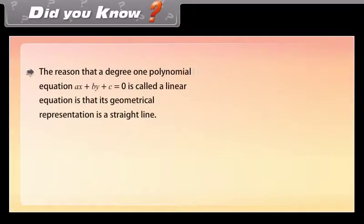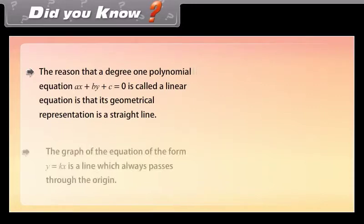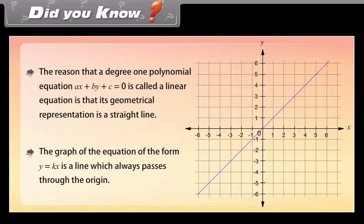The reason that a degree-1 polynomial equation AX plus BY plus C is equal to 0 is called a linear equation is that its geometrical representation is a straight line. The graph of the equation of the form Y is equal to kX is a line which always passes through the origin.